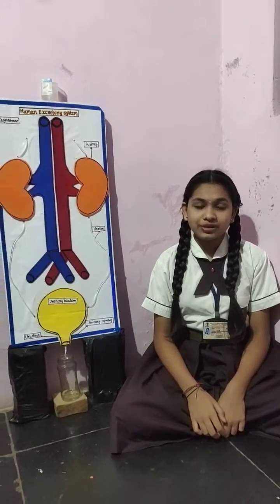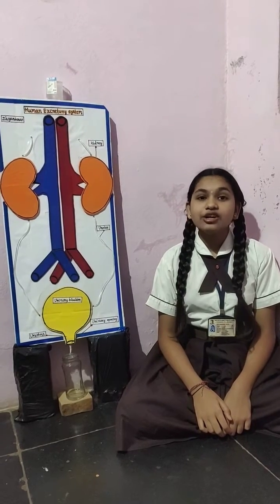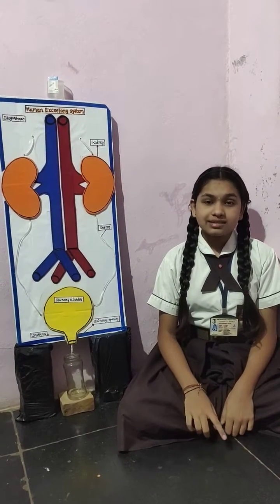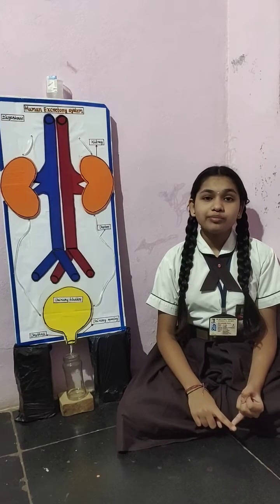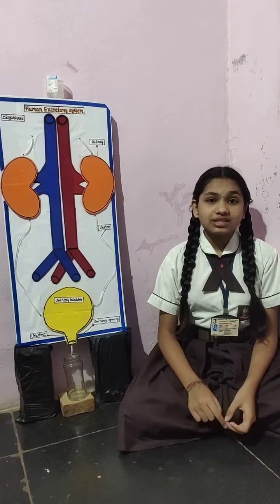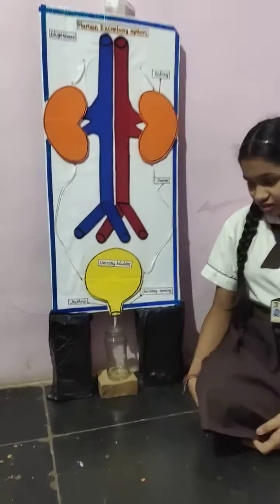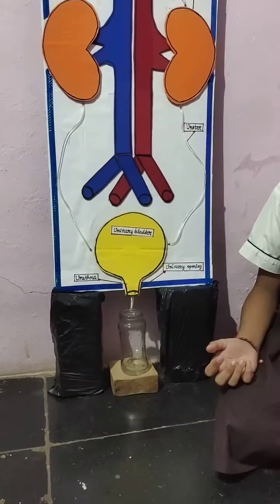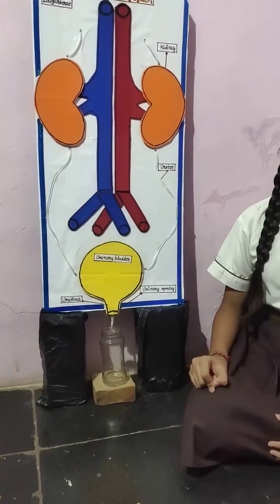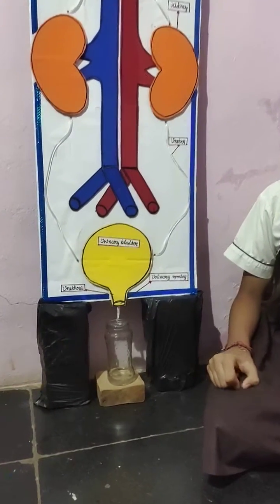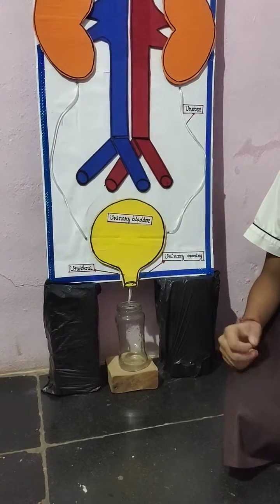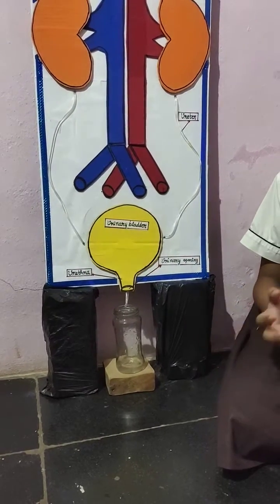An adult human being normally passes 1 to 1.8 liters of urine. The urine consists of 95% water, 2.5% urea, and 2.5% other waste products.